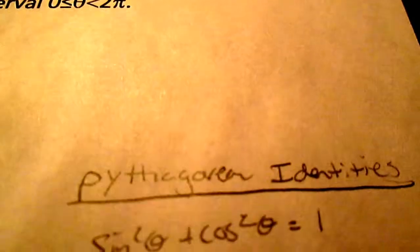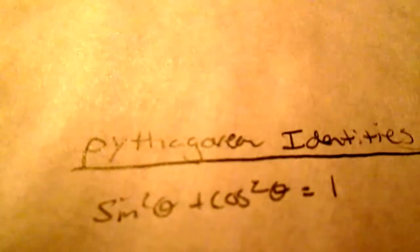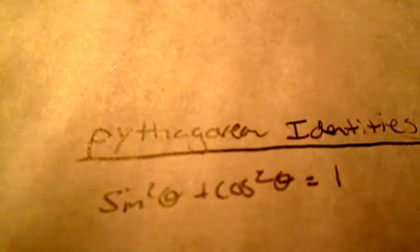And we also need to understand the Pythagorean identity that we're going to be using. Sine squared theta plus cosine squared theta equals 1.